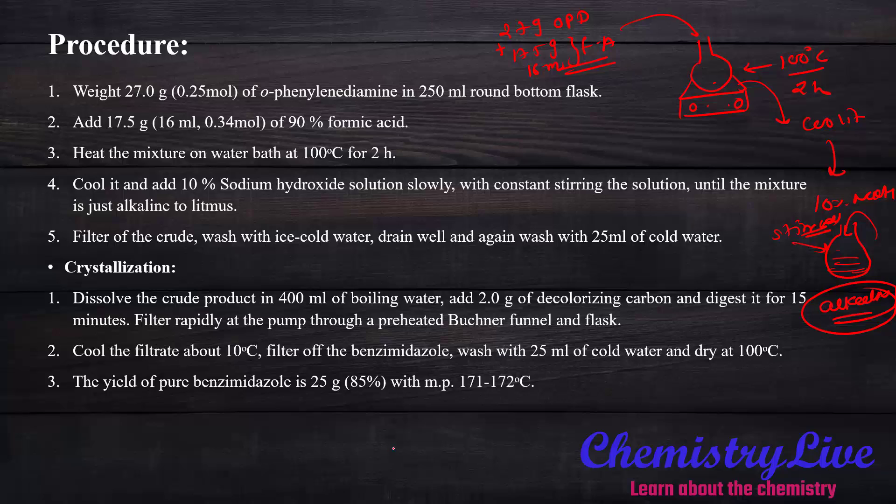In the crystallization process boil 400 ml water. Add 2 grams of carbon or animal charcoal. Then the crude compound. Digest it for 15 minutes. Then filter it. Put it in 10 degree centigrade temperature. We will get benzimidazole crystals immediately. Wash with 25 ml cold water and dry it at 100 degree temperature. We will get 25 gram compound.